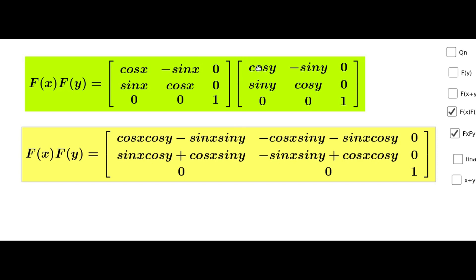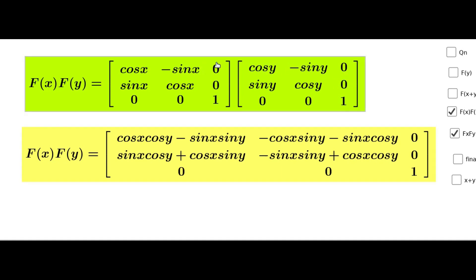First row, first column: cos x·cos y + (-sin x)·sin y = cos x cos y - sin x sin y. First row, second column: cos x·(-sin y) + (-sin x)·cos y = -cos x sin y - sin x cos y. First row, third column: cos x·0 + (-sin x)·0 + 0·1 = 0.